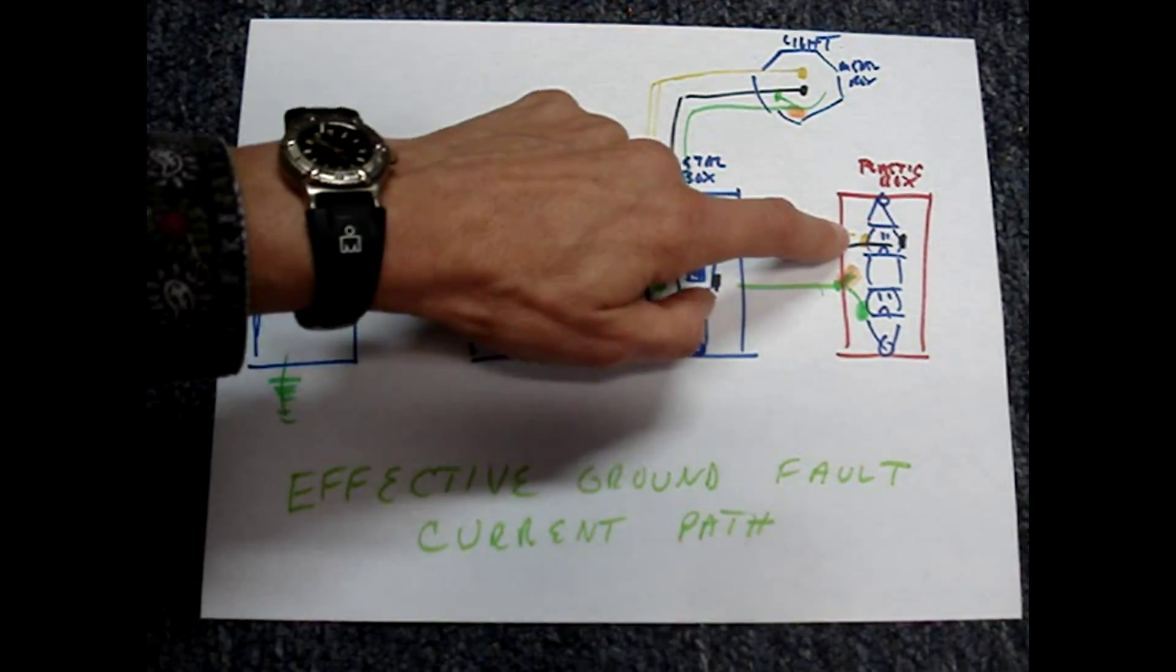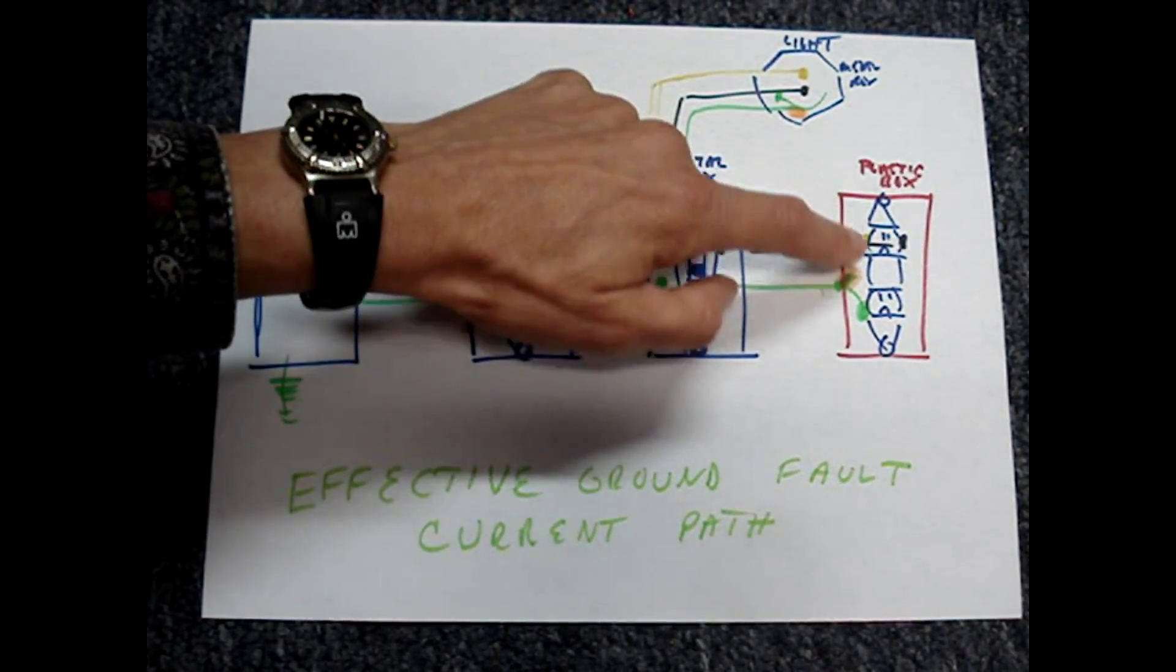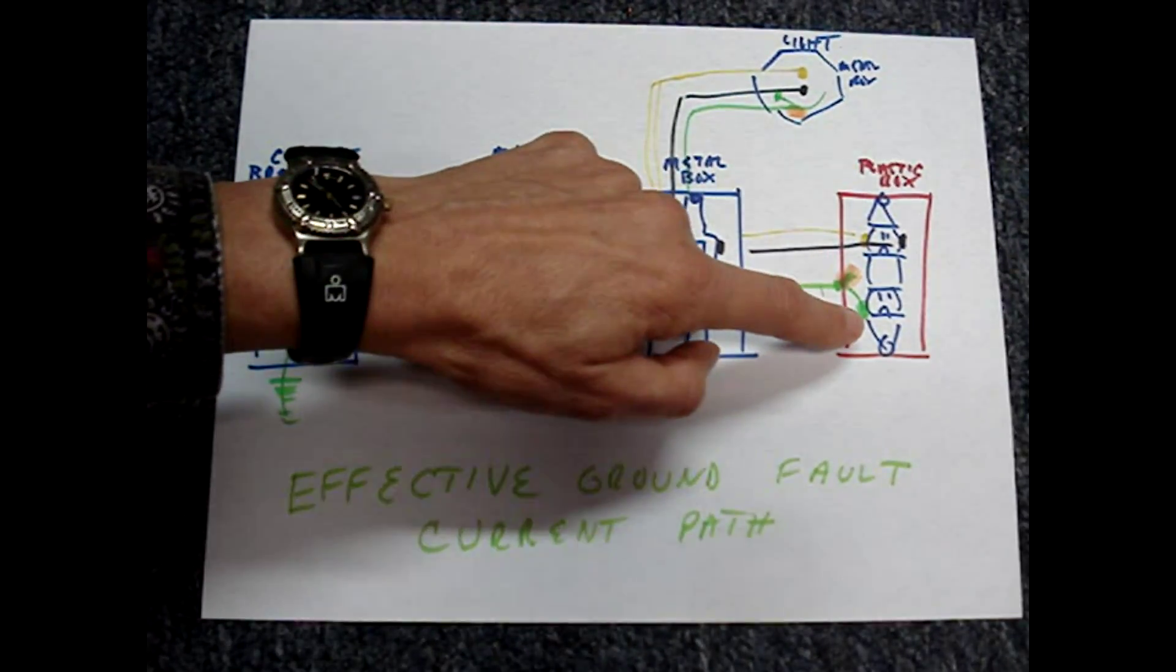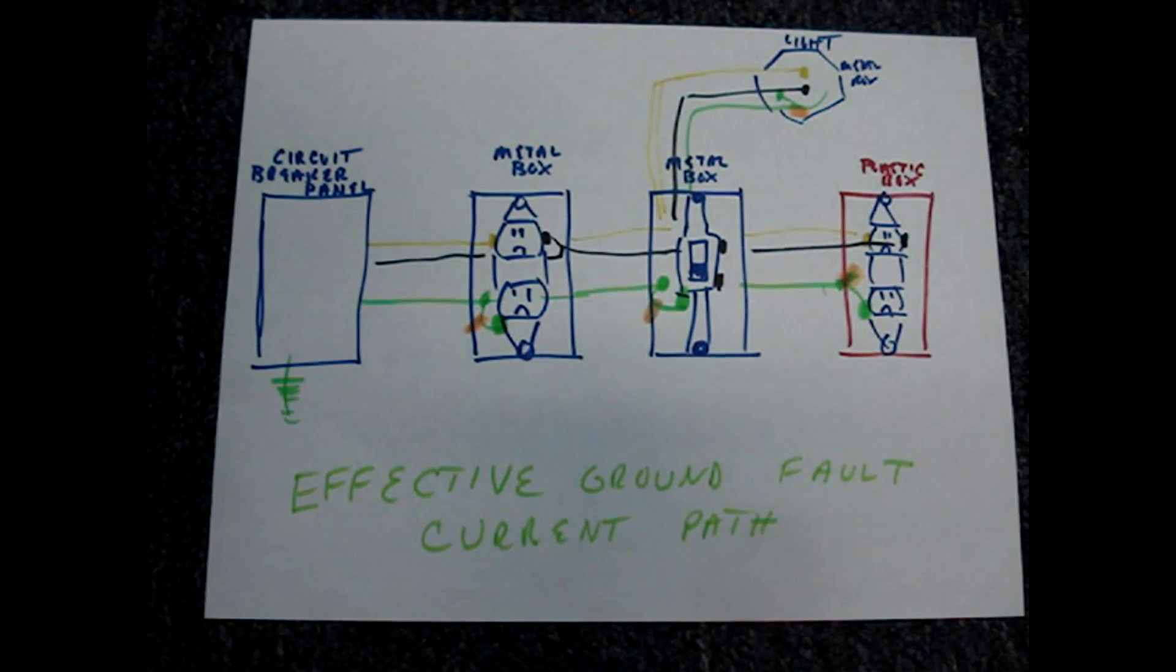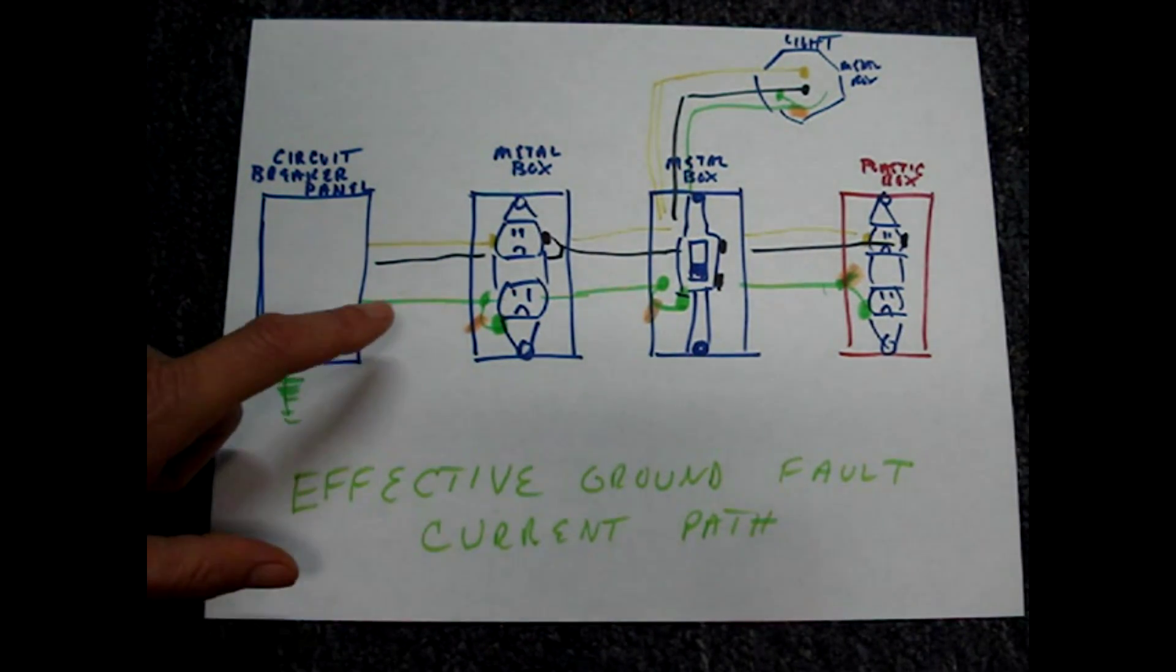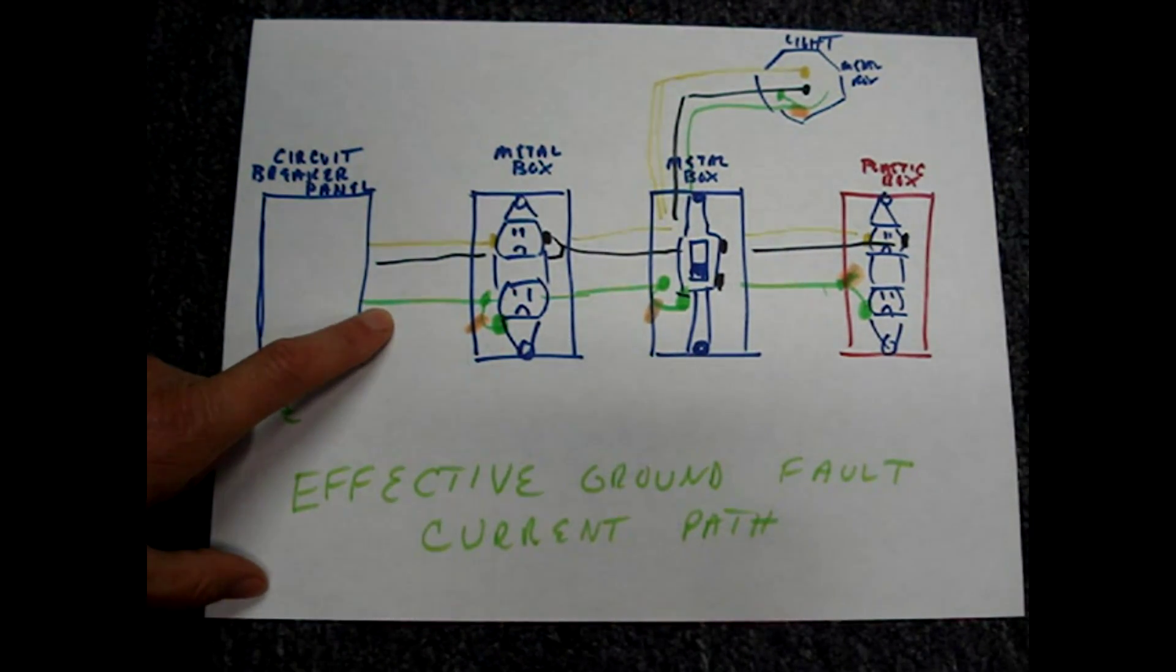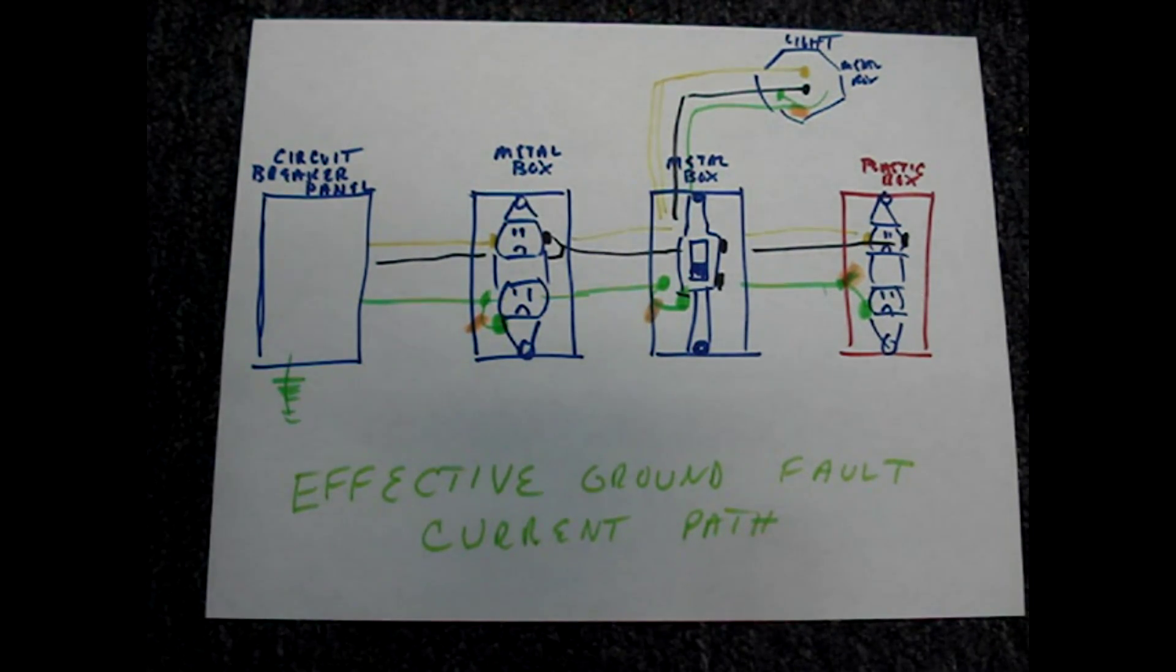However, any metal parts inside of the box would need to be connected to the ground wire. For safety reasons, it's very important to correctly connect the ground wire in a circuit. If you'd like to understand how that ground wire functions, click on the channel name, Know How Now, to find a video that explains its purpose.